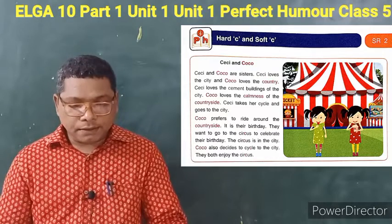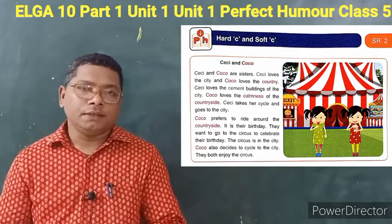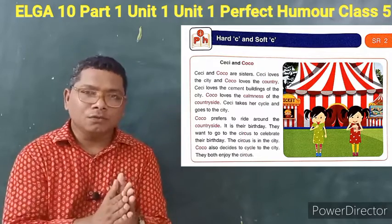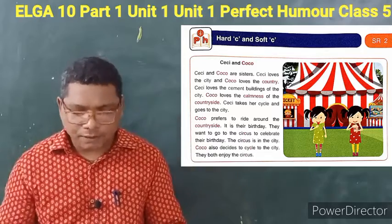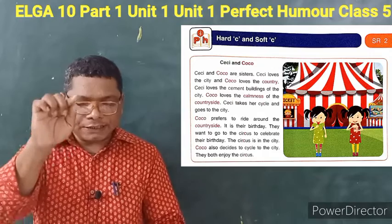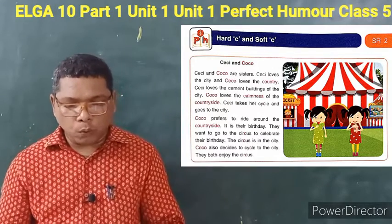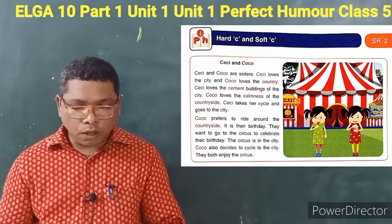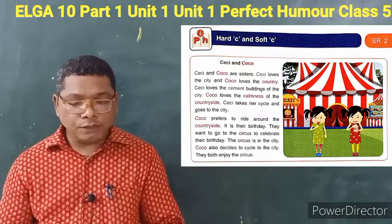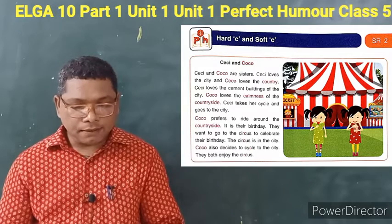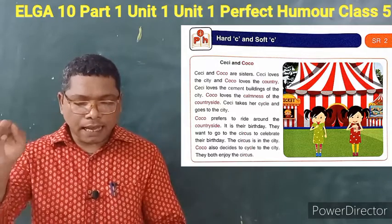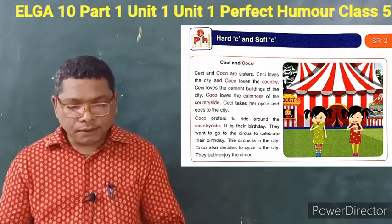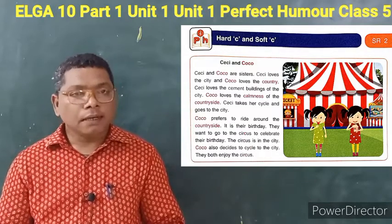Sisi loves the city and Coco loves the country. City is a town, and country means village or countryside. Sisi loves the cement buildings of the city. Coco loves the calmness of the countryside. Sisi takes her cycle and goes to the city — Sisi, cycle, and city are all soft C. But country, calmness, and countryside are all hard C.